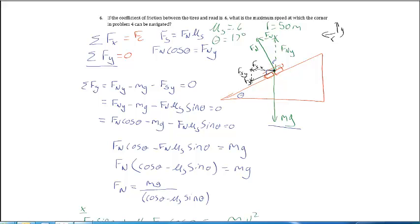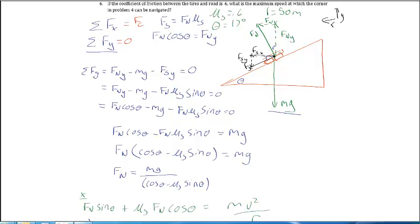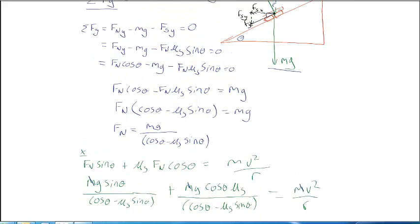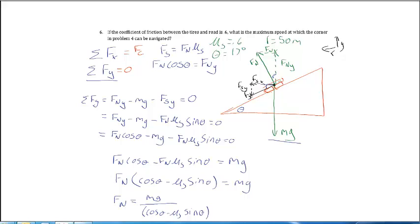So I want you to work through this problem. Follow along with my work. See if you can get there. And then I want you to actually do the other thing. I'm going to change the angle on you. And I'm going to say if the angle is 35 degrees, what's the minimum speed at which you can turn this corner?